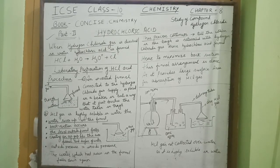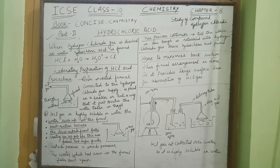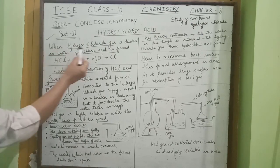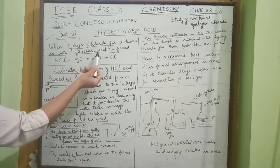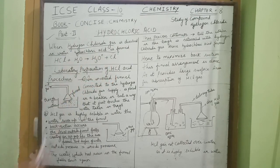Welcome to ICSE class 10th chemistry chapter 8, study of compound hydrogen chloride, part 2. Now we are going to prepare hydrochloric acid from hydrogen chloride gas. When hydrogen chloride gas is dissolved in water, hydrochloric acid is formed.